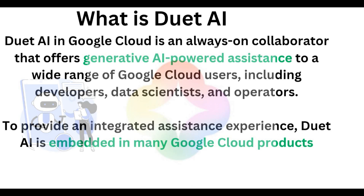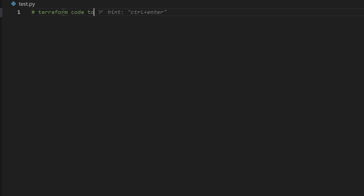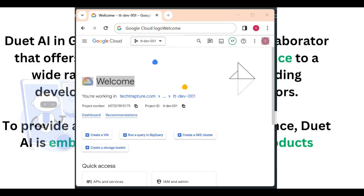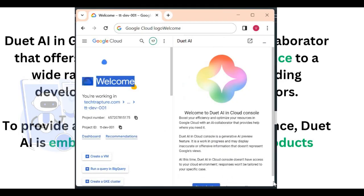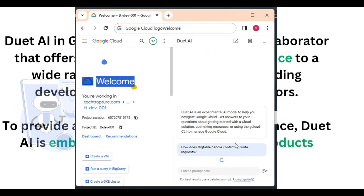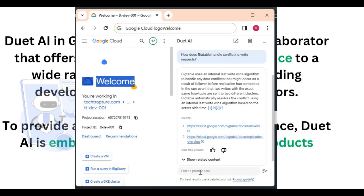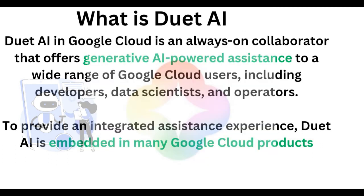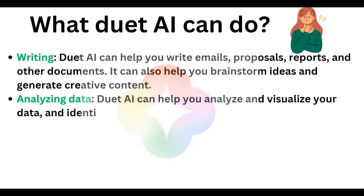Now, Duet AI is a kind of generative AI service that helps you in your development. You can embed Duet AI in your VS Code, your cloud console, or your cloud workstation, so you don't need to go outside your browser or window to get help from other AI tools like Bard or ChatGPT. It is embedded in multiple Google Cloud products like Cloud SQL, Compute Engine, Cloud Console, and BigQuery as well.